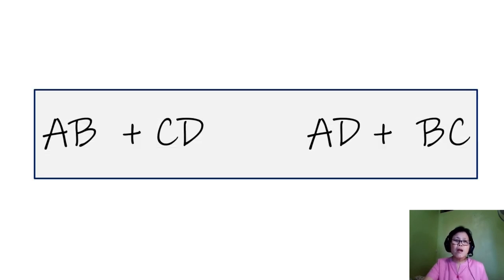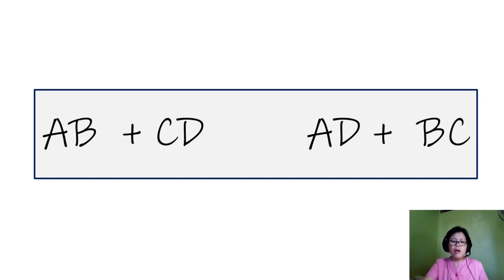The general way of writing a double replacement reaction: AB, where A and B are paired up, plus CD, where C and D are paired up. They switch partners to give us AD and BC. This is your general way of writing the double replacement reaction.